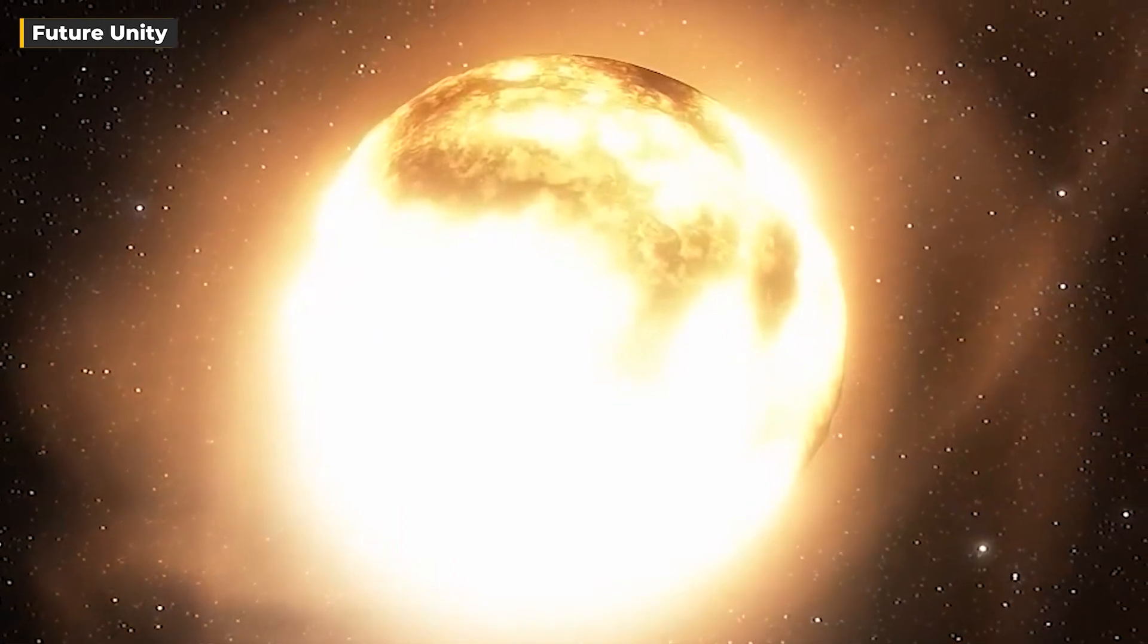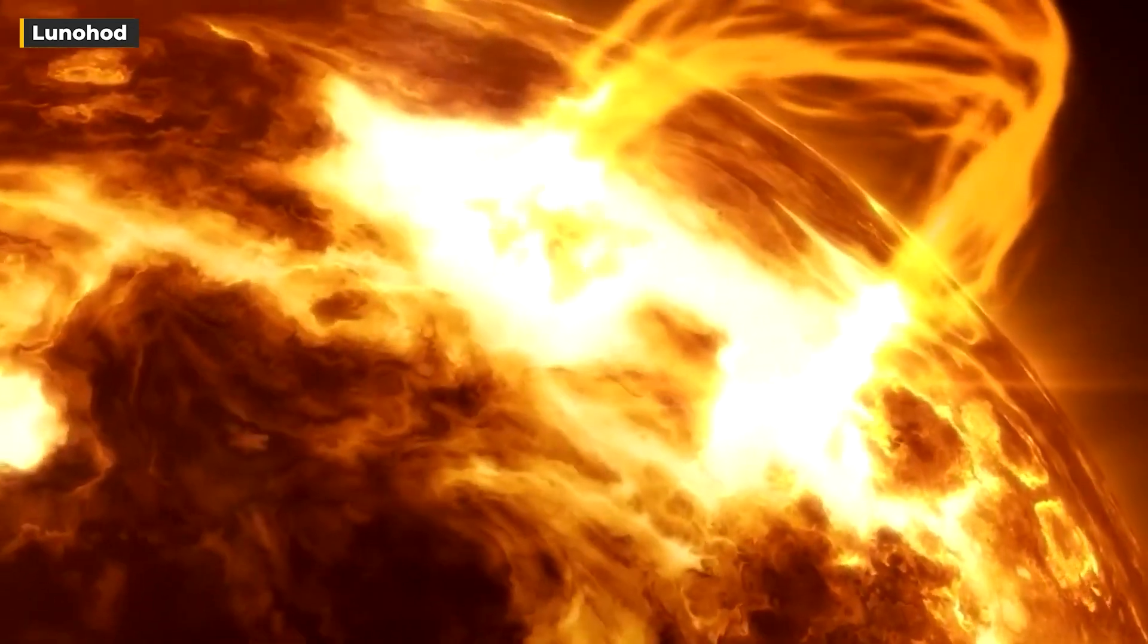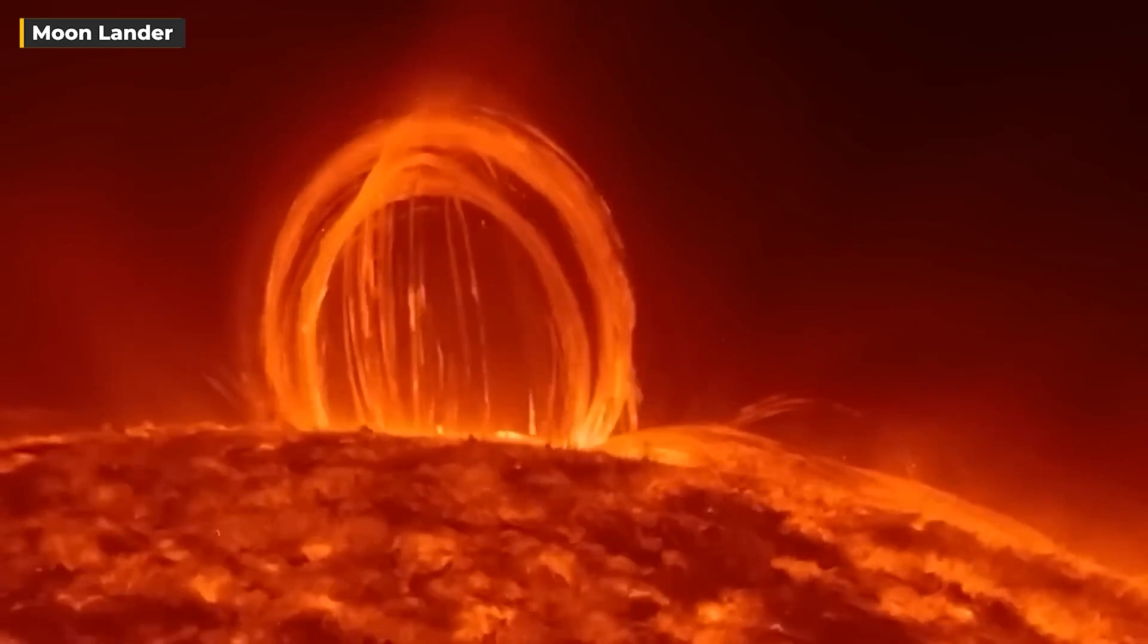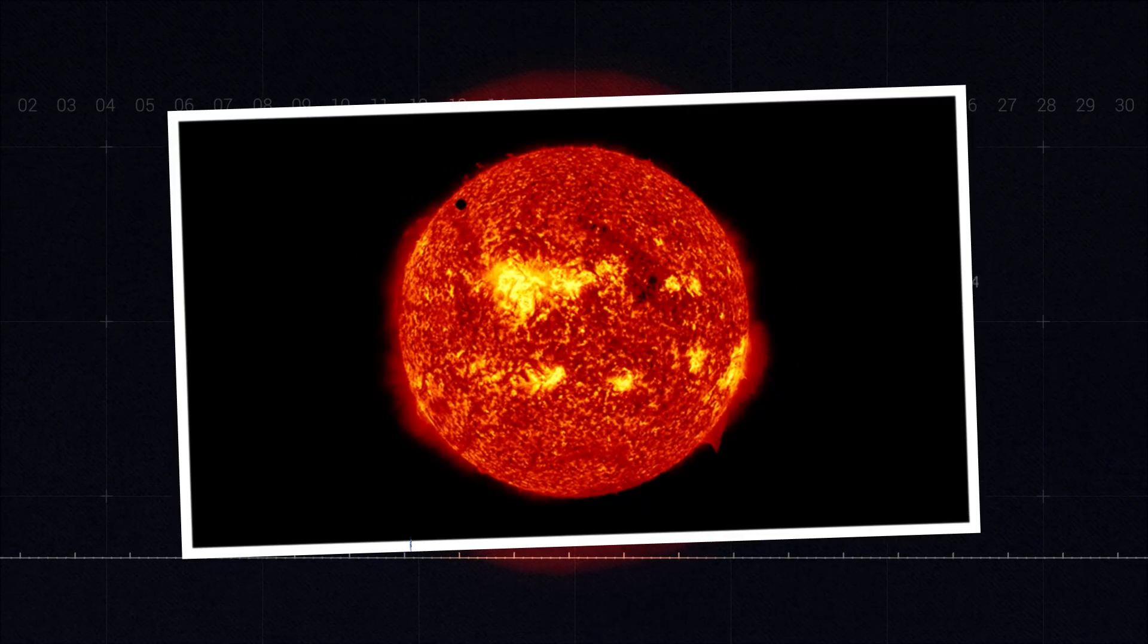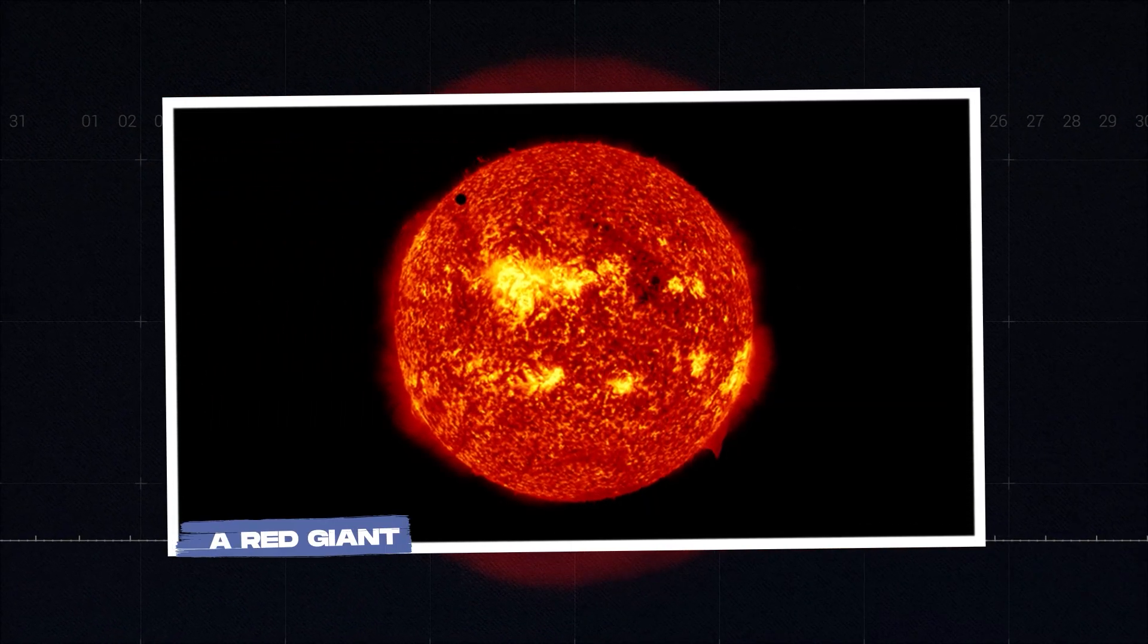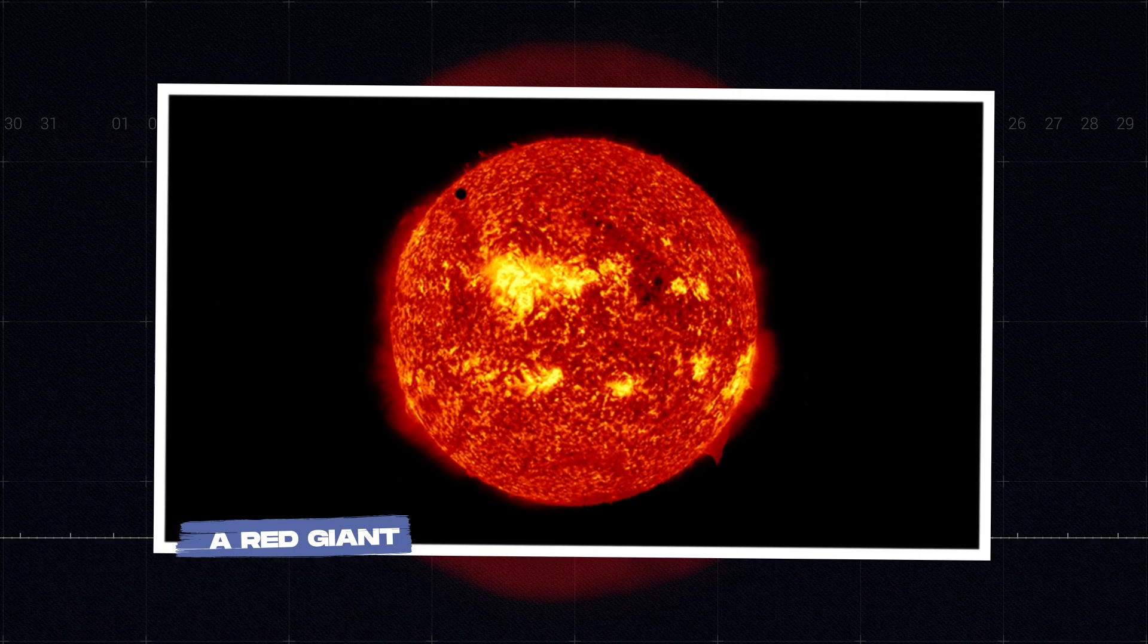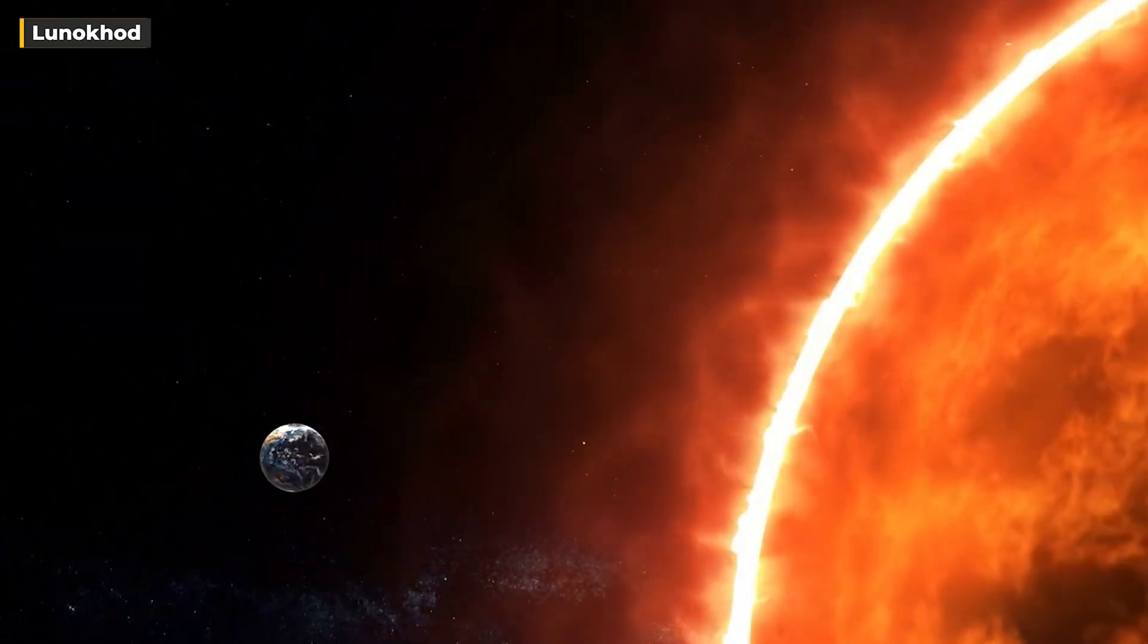Stars like Betelgeuse have a fascinating life story. They start in the main sequence stage, burning hydrogen as their fuel for millions of years. But as their hydrogen runs out, they switch to burning helium, which creates elements like carbon and oxygen. Then something spectacular happens. Betelgeuse swells up into a red giant, and as it uses up its helium, it goes through more changes, burning even heavier stuff. The bigger the star, the faster these changes occur, all thanks to powerful gravity.